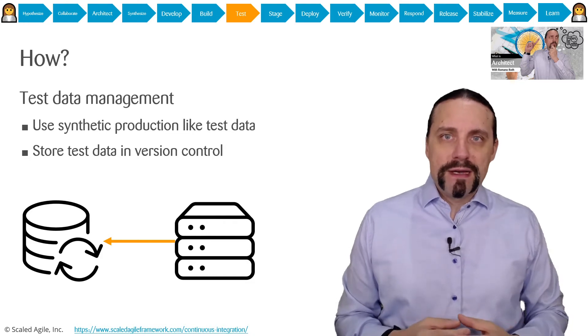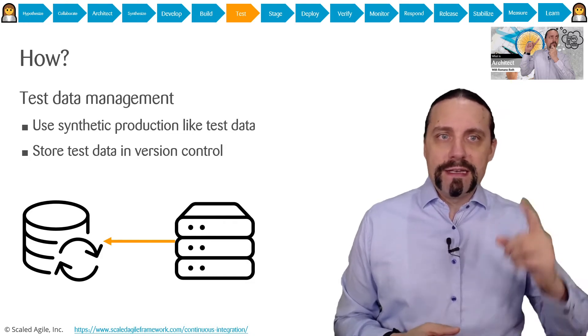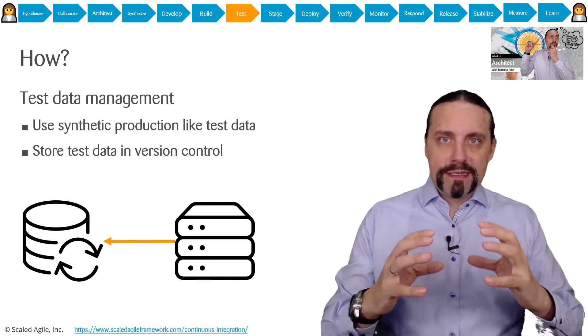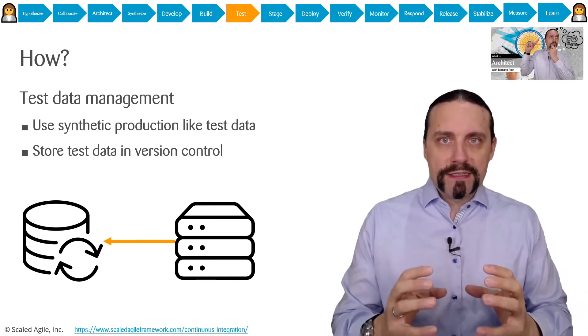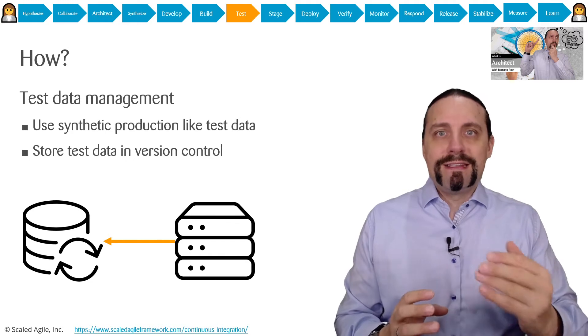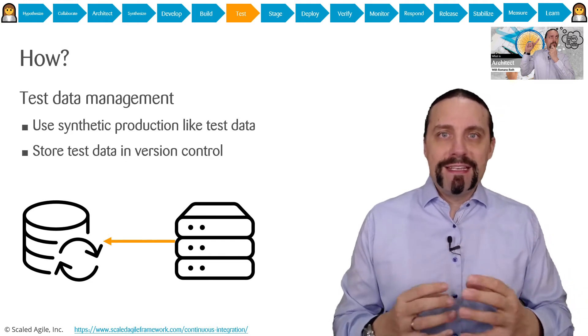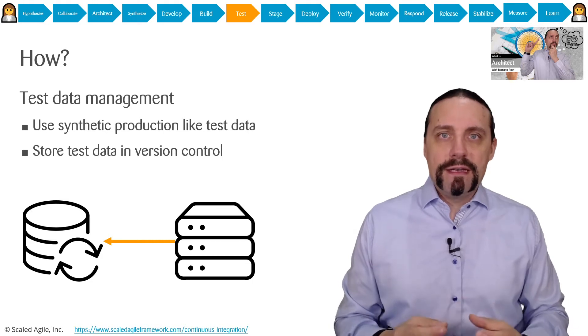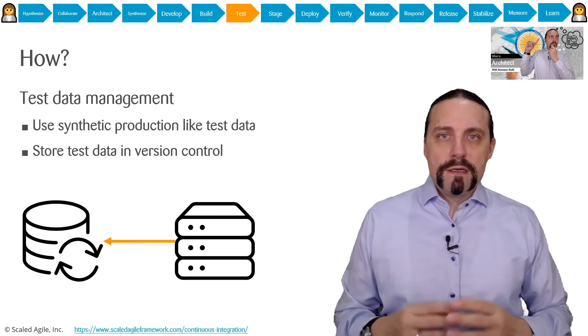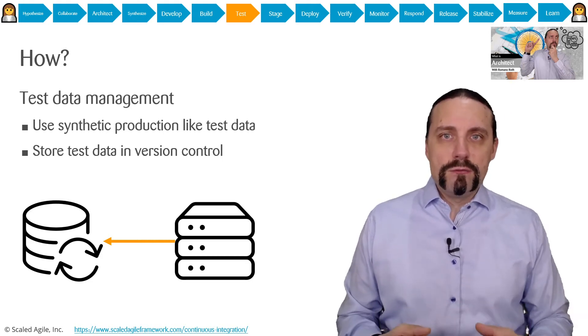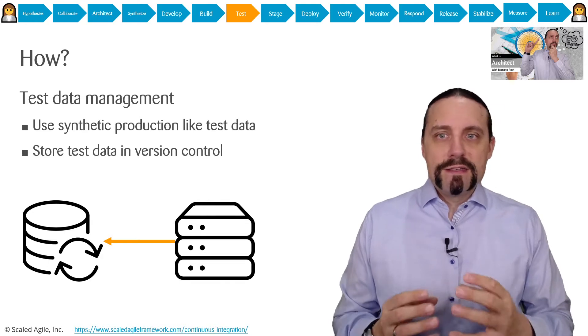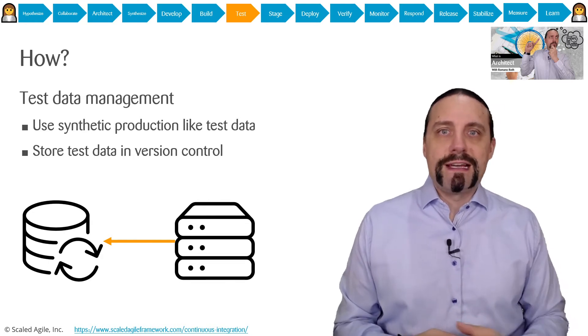We talked about test data already in the architect step where we said that we need to architect the system so that it is testable. And then we created the test data in the develop step. It is essential that we use synthetic production-like test data for testing.